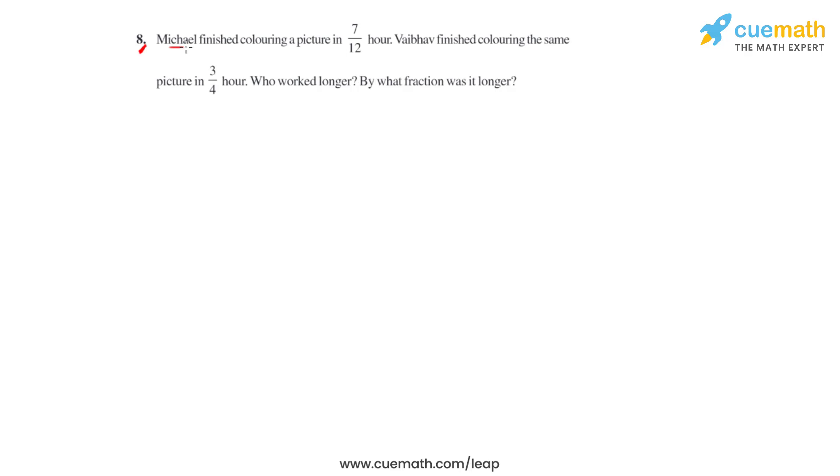Question number 8 says that Michael finished coloring a picture in 7 over 12 hours. Vaibhav finished coloring the same picture in 3 fourths hour. Who worked longer and by what fraction was it longer?